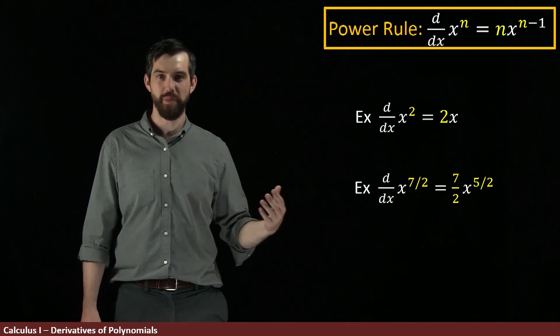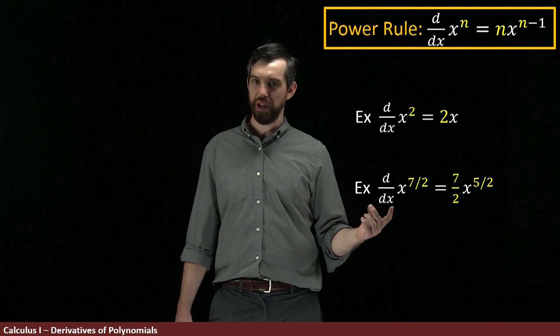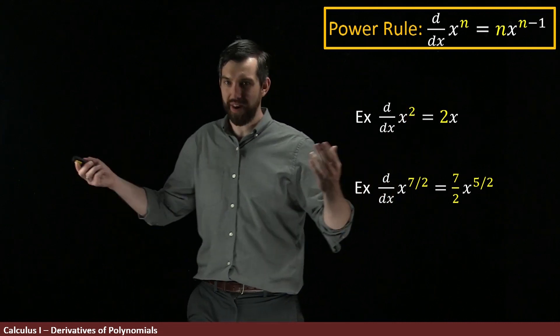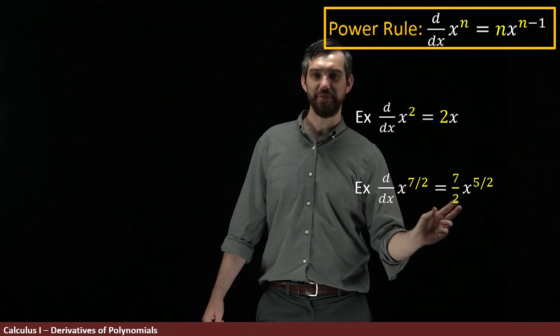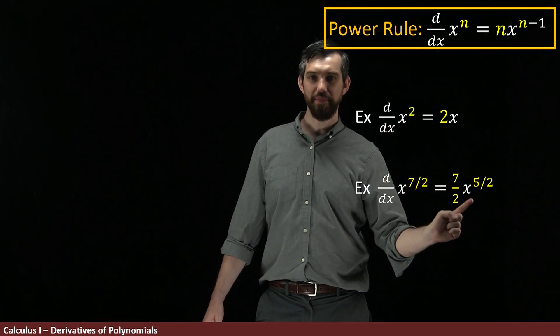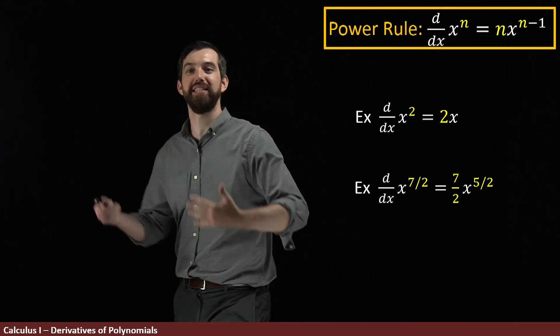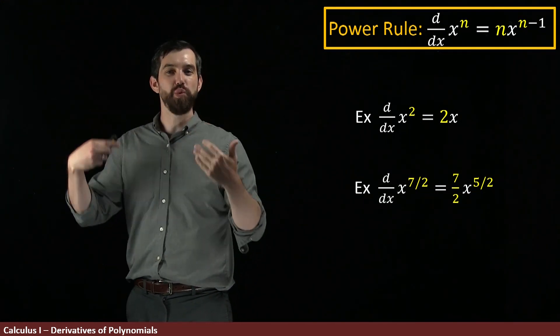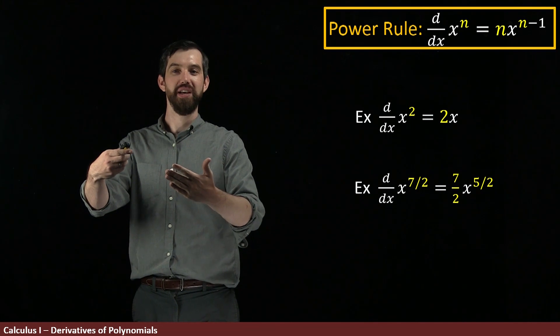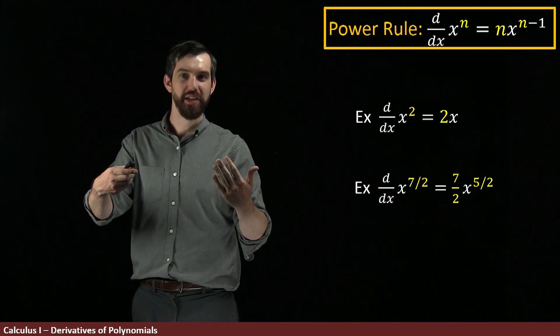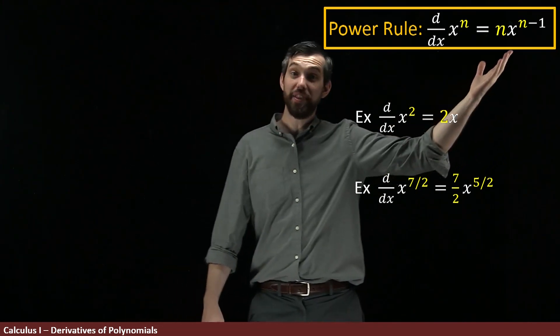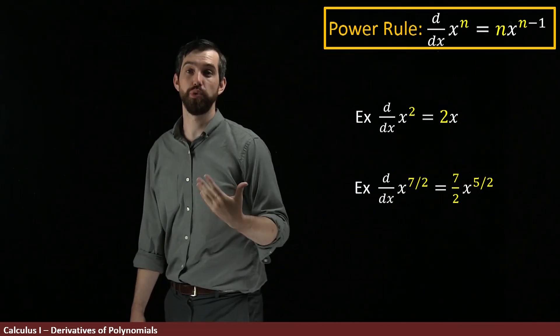So, I can, for instance, talk about what happens if I take the derivative of x to the 7 halves. Well, the 7 halves comes down, and then x to the 5 halves. What's 5 halves? It's 7 halves minus 1 is 5 halves, 7 halves minus 2 halves, so 5 halves. So, in other words, you get this n x to the n minus 1 behavior as well.